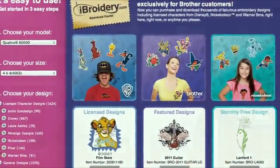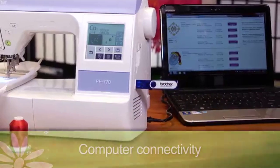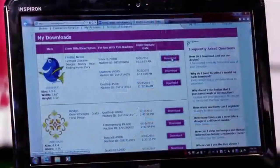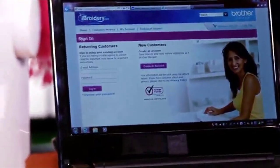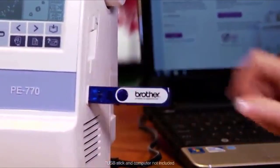The PE-770, which has computer connectivity, makes design import easy. Simply download designs from iBroidery.com or your computer to a USB stick and insert the stick in the conveniently located USB port.